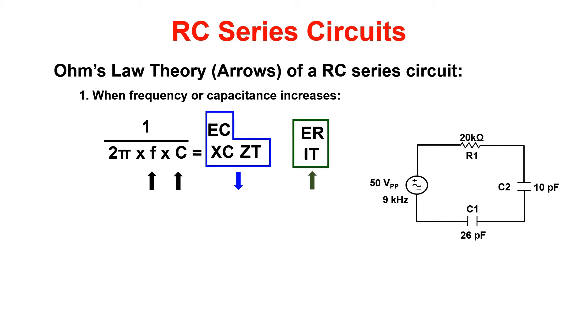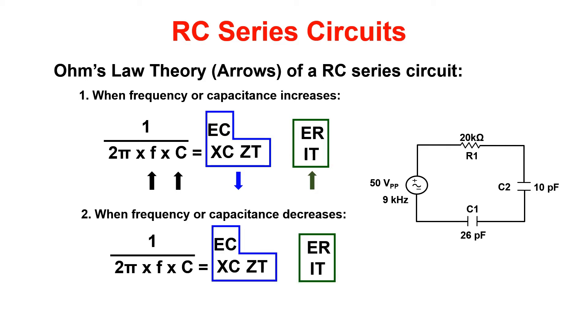The opposite is true if frequency or capacitance decreases. EC, XC, and ZT will increase. ER and IT will decrease.